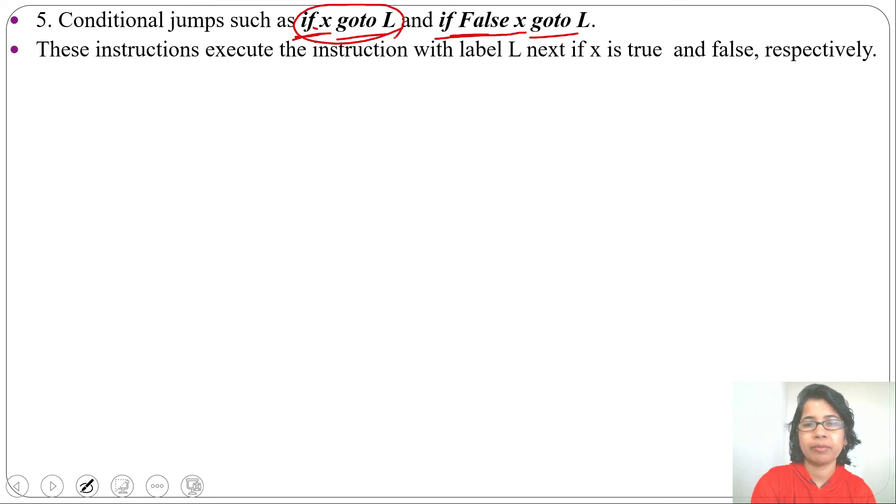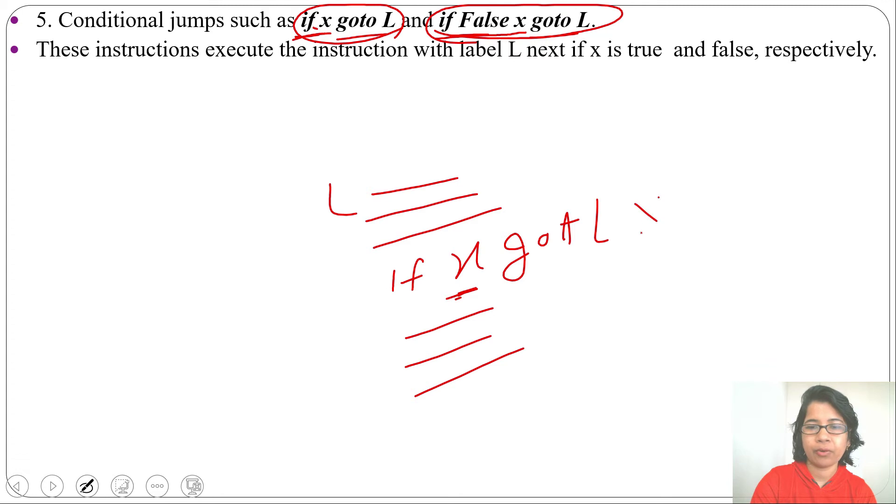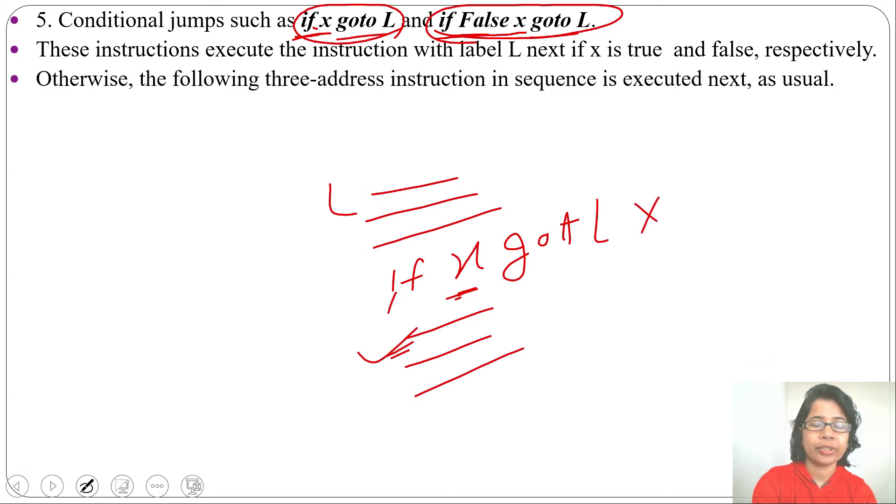For this, if it will be true; for this, if it will be false. Suppose some statements are given and here if x goto L. So if x condition is true then it will go to L, and after that some more statements are given. So if x will be false then it will execute its next statement. Otherwise, the following three-address instruction in sequence would be executed next, meaning if this condition is false it will execute the next instruction.